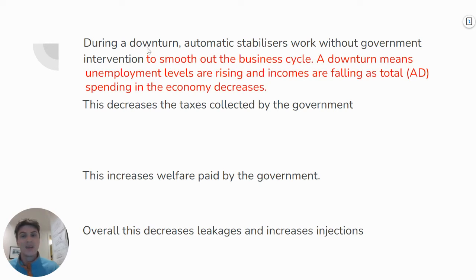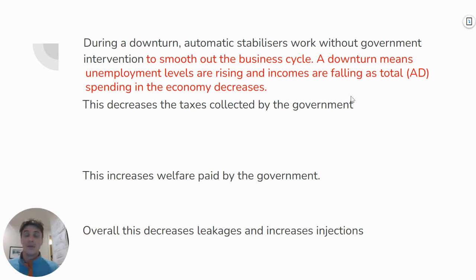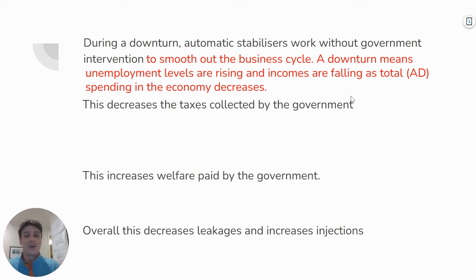First of all, I haven't said what a downturn is — and I told you it's really important to set the scene. So add in that automatic stabilizers work without government intervention to smooth out the business cycle. Then explain what a downturn means: unemployment levels are rising, people aren't going to have as many jobs; incomes are falling — if people lose their job, their income falls; and the total level of spending in the economy is decreasing. That sets the scene for the examiner.